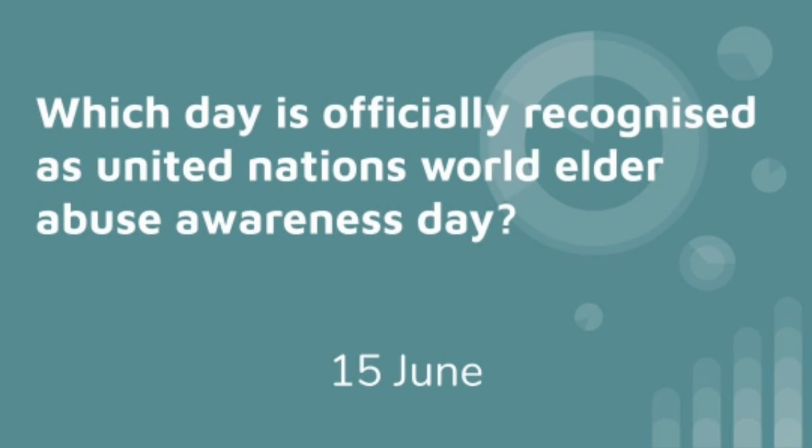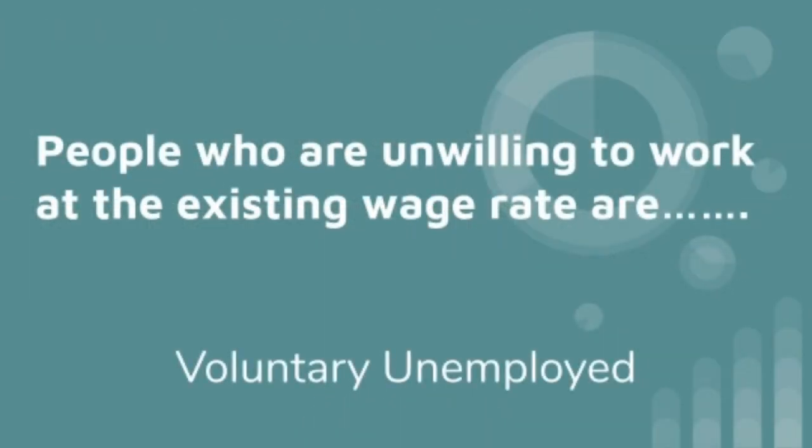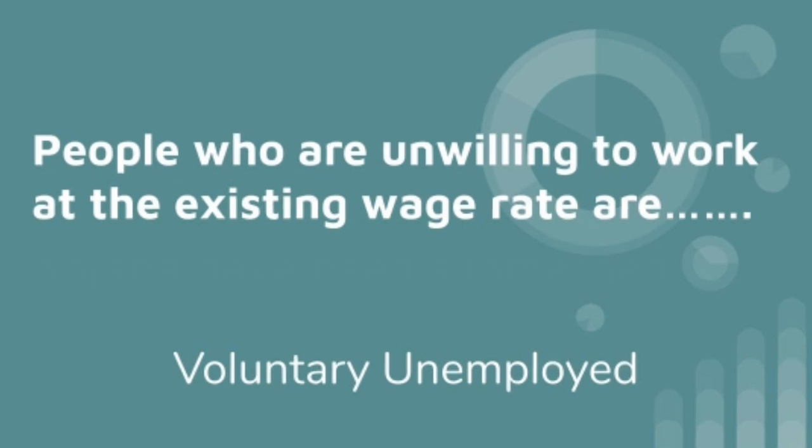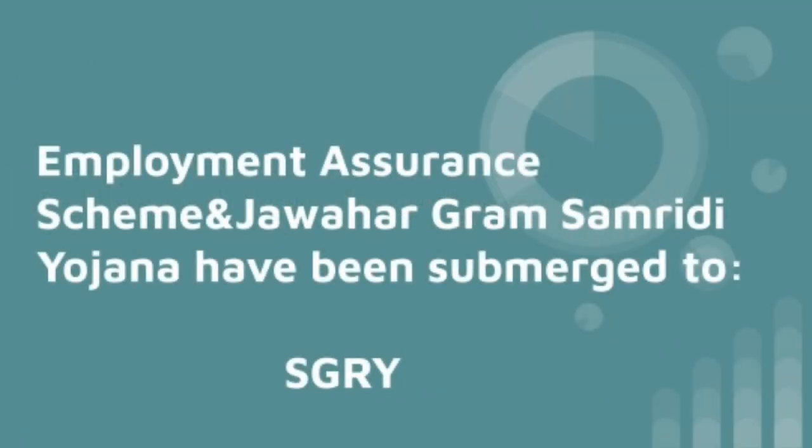People who are unwilling to work at the existing wage rate are called Voluntary Unemployed. The Employment Assurance Scheme and Jawahar Gram Samridhi Yojana have been merged into SGRY.